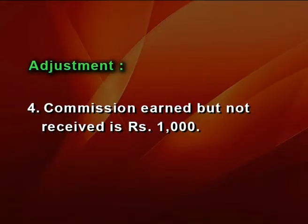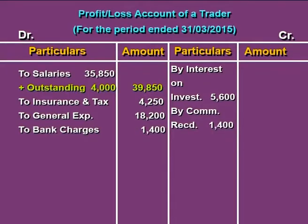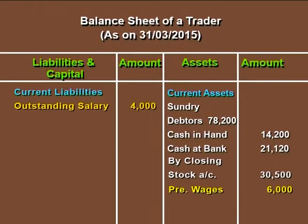As prepaid expenses are current assets, it is reported as a current asset in the balance sheet. The next adjustment says commission earned but not received is Rs 1,000. This is accrued commission. Accrued income is an increase, so these incomes are added to the concerned incomes. In the profit or loss account, commission received of Rs 1,400 has been increased by this Rs 1,000 accrued commission. Accrued incomes are also reported as current assets in the balance sheet.